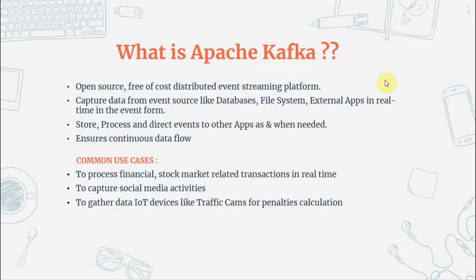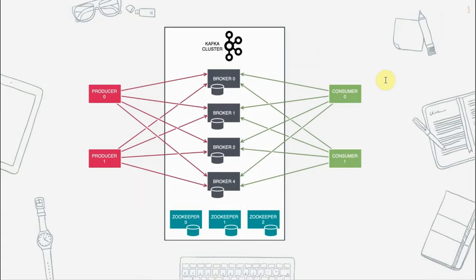This is the high-level architecture of Apache Kafka. It is a distributed system, meaning it runs as a cluster of one or more servers. On the left-hand side we have producers, which push data to the Kafka topics, while on the right-hand side we have consumers or subscribers, which read data from the Kafka topic and feed it to other applications.